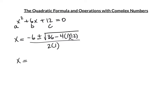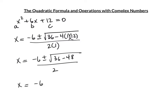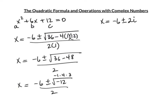36 - 48 = -12. So we have -6 ± √(-12) / 2. Factor -12 = -1 × 4 × 3. x = -6 ± √4·√(-1)·√3 / 2 = -6 ± 2i√3 / 2.